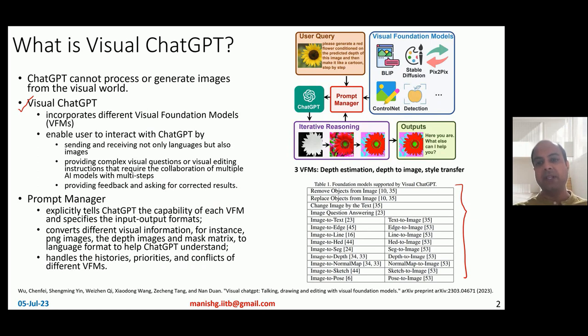Visual foundation models can actually take images and do some processing on top of them. For example, extract objects from images, replace objects, take images and convert them to text, or take images and do question answering on top of those images, depth estimation, or finding depth of every pixel and so on. Manipulations with images in short.